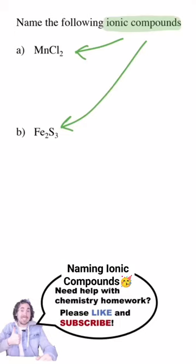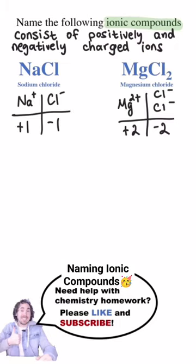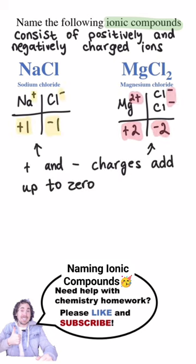Ionic compounds consist of positively charged and negatively charged ions that combine in a proportion so that their charges add up to zero.